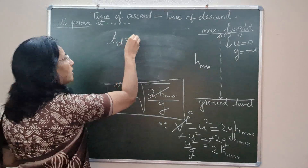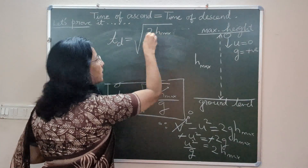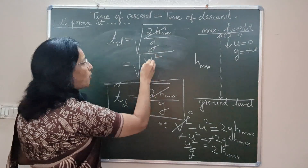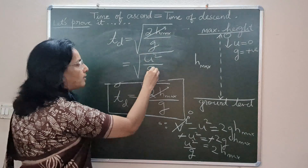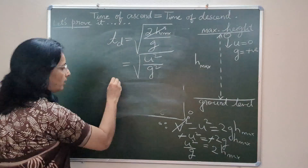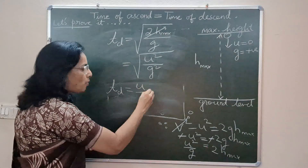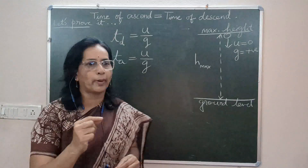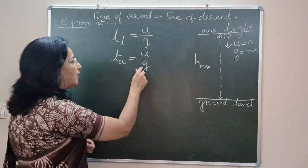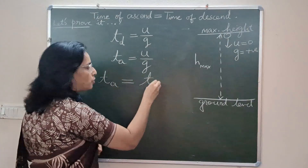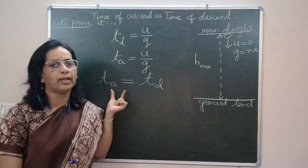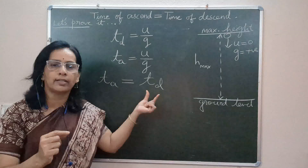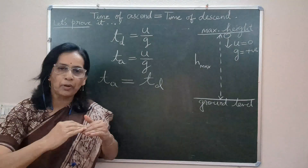Time of descent was √(2h_max/g). Substituting 2h_max = u²/g, we get √(u²/g²), which equals u/g, since the square root cancels with the square. So time of descent is also u/g. Earlier we proved that time of ascent is also u/g. Therefore, time of ascent is always equal to time of descent — both calculated using the formula u/g, as proven through this derivation.